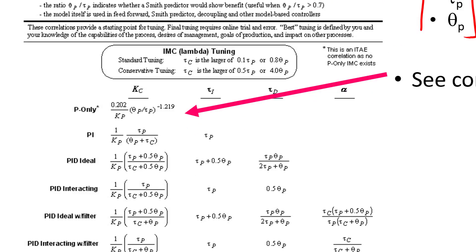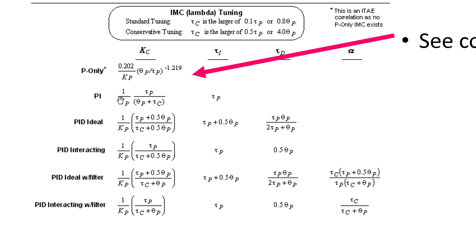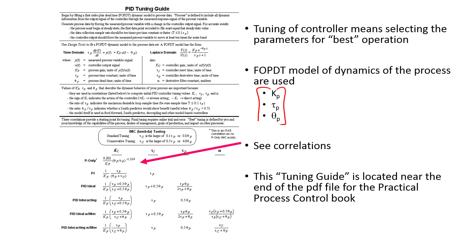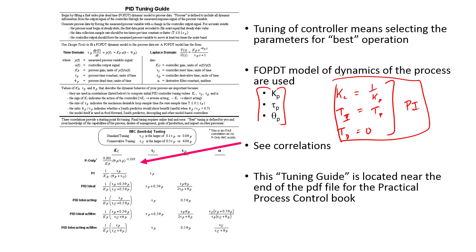Zooming in on the IMC tuning correlations, you can see that k_p, tau_p, and theta_p feed into the correlations to give good starting points for the controllers. One tuning guide I like: k_c equals 1/k_p, tau_i equals tau_p, and tau_d equals 0. This is a PI controller that often does very well. You can also use IMC or ITAE correlations, which are very popular.